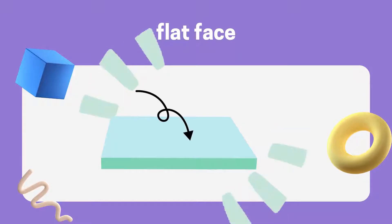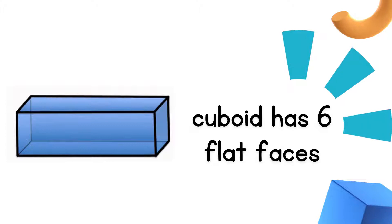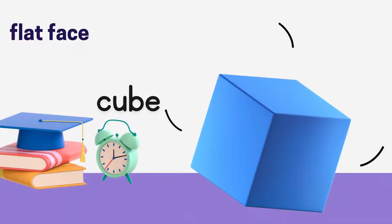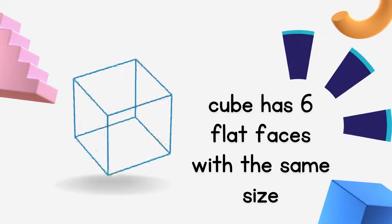Now, we're going to look at flat face. Say with me. Flat face. A cuboid has 6 flat faces. A cuboid has 6 flat faces. Cuboid has 6 flat faces. Cuboid has 6 flat faces with the same size.